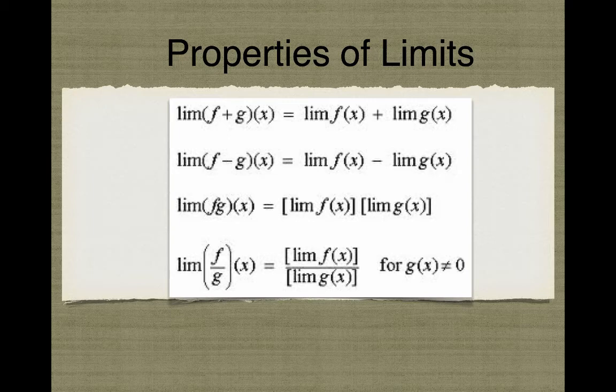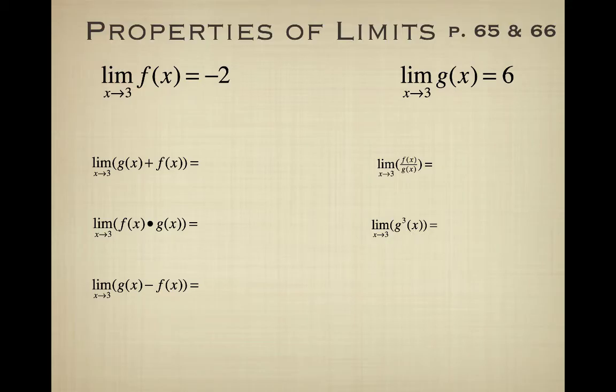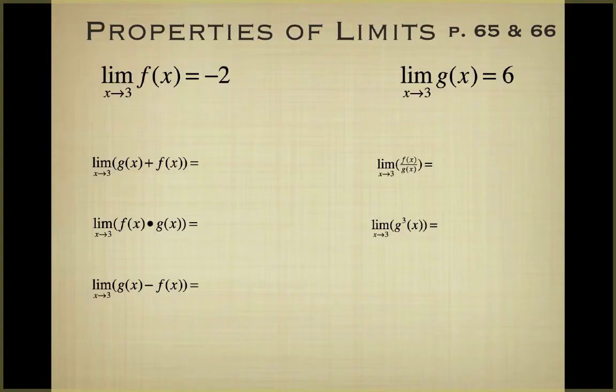There's also a constant multiple rule and some other properties in the book, so make sure you look at the table. Now, for the properties of limits examples: the limit as x approaches 3 of f(x) equals negative 2, and the limit as x approaches 3 of g(x) equals 6. We're going to use these and the properties from before to break things up and evaluate.